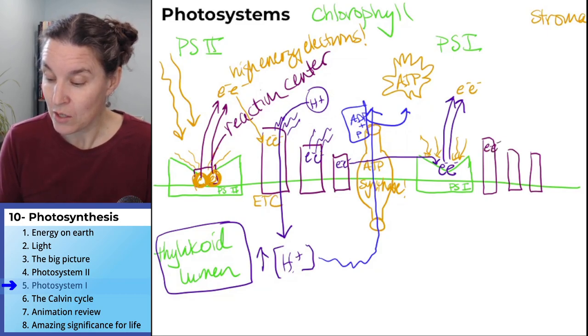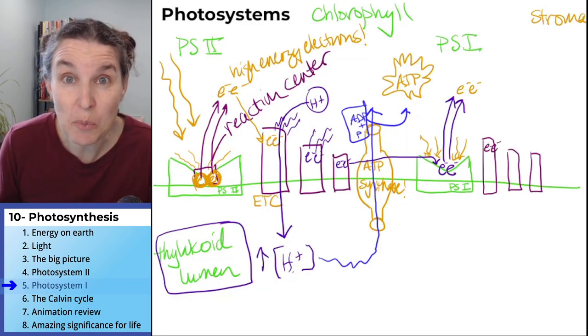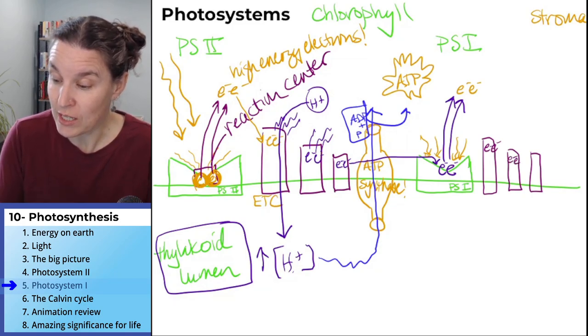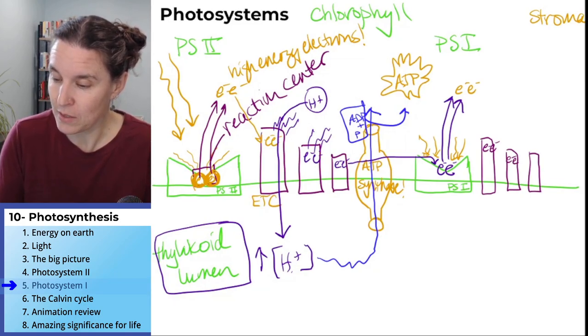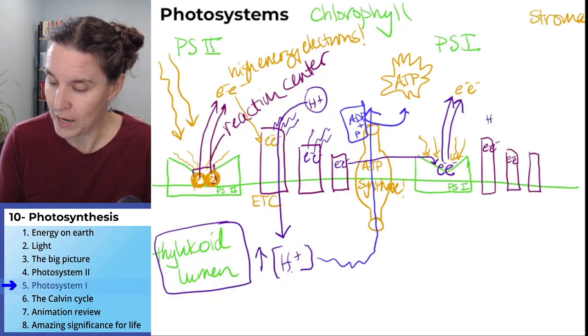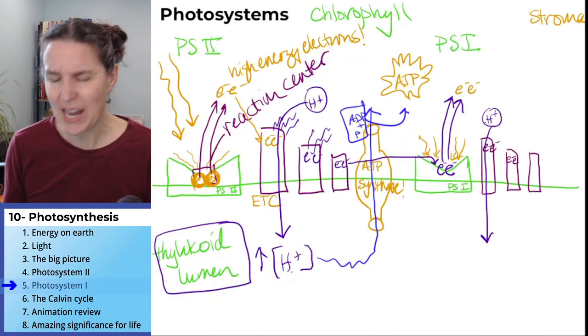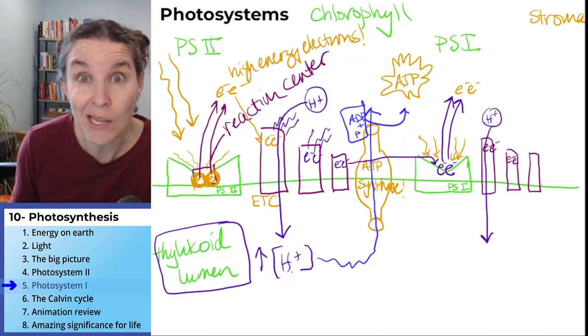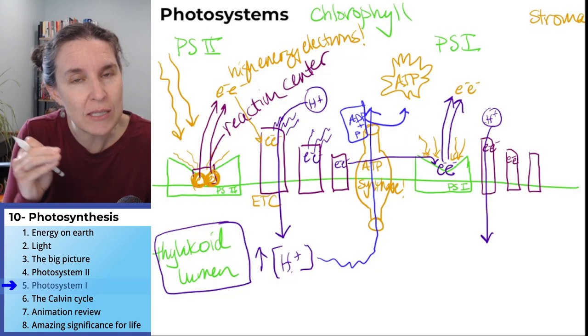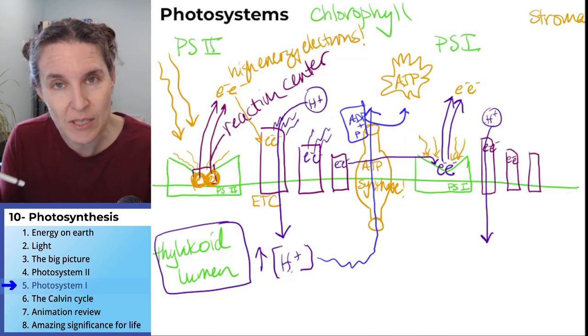Same story, use the energy to pump - use the energy to pump hydrogen ions. All we're doing, and look, we're pumping hydrogen ions into the same thylakoid lumen. So both photosystem two and photosystem one are creating energy that's forming that hydrogen ion concentration gradient.